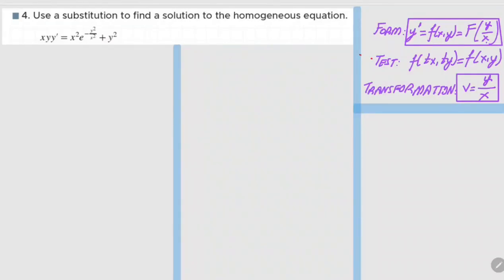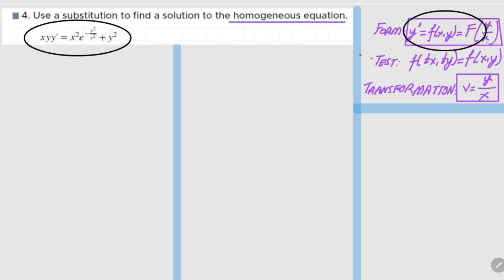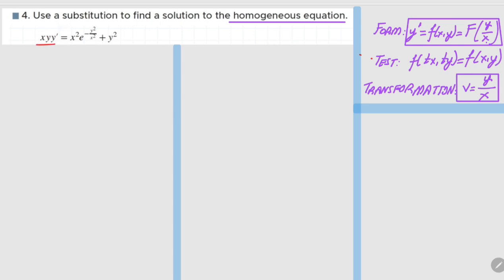My dear friends, let's solve another question on homogeneous equations. The given question is very close to the general form, and what we need to do is solve this equation for y prime. For that purpose, we need to divide both sides by x times y. When we do so, what we obtain is y prime.